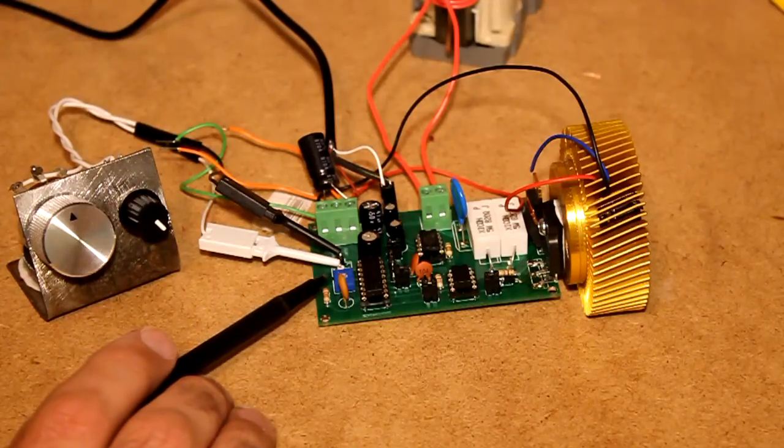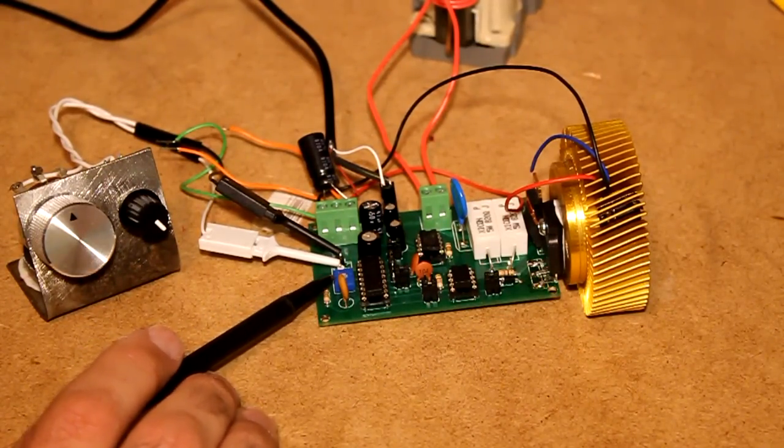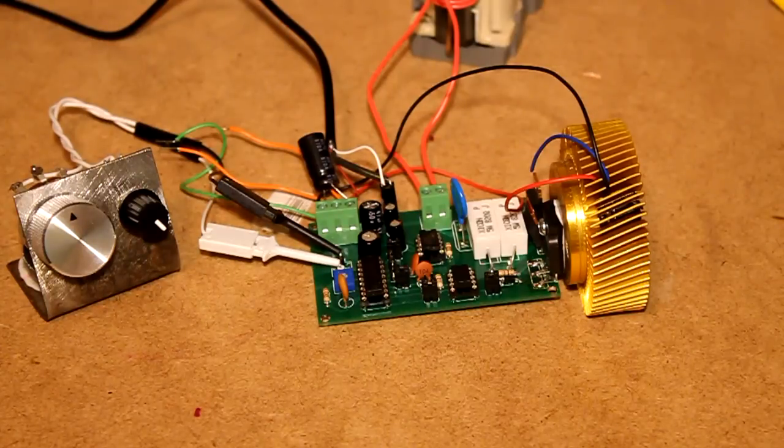The other one here is this little pot and that controls the dead time, which is essentially the width of the on pulse as compared to the off pulse.